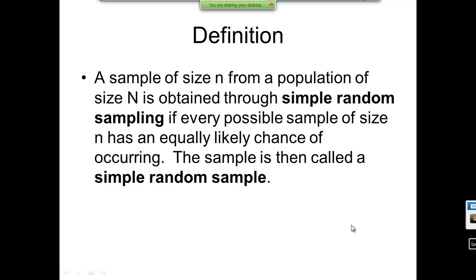We take a sample of size little n from a population of size capital N. Little n is how many are in your sample — so if I talk to 20 individuals in a town, little n is 20. Capital N is your population size, and that's true throughout this entire course. For example, if Mulvane has 8,000 people, capital N is 8,000 and little n might be 20. A simple random sample is obtained when every possible sample of size n has an equally likely chance of occurring. It's very important that you don't try to tailor your sample to get the results you want.